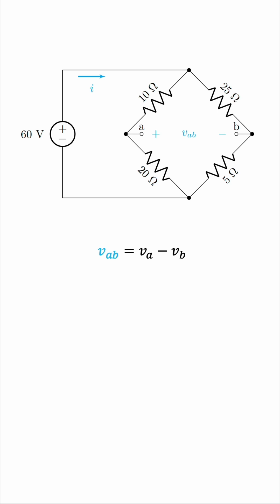We have this current I entering the circuit, and this current is 60, which is the voltage source, divided by the equivalent resistance with respect to this voltage source. What is this equivalent resistance? Well, we have a path of 10 plus 20, and a path of 25 plus 5 ohms. So, this equivalent resistance is 10 plus 20 in parallel with 25 plus 5. Can you see it? This will be 30 in parallel with 30, which is 15 ohms. So, the current going into the circuit is 60 over 15, or 4 amperes.